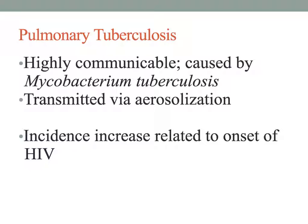Transmission occurs when an infected person coughs or sneezes, spreading infected droplets into the air. A person with poor immunity inhales these droplets, and the bacilli are deposited in the lungs. The immune system responds by sending leukocytes and inflammation to the area. After a few days, macrophages—a type of white blood cell—come and ingest the bacilli, carrying them to the lymph nodes.